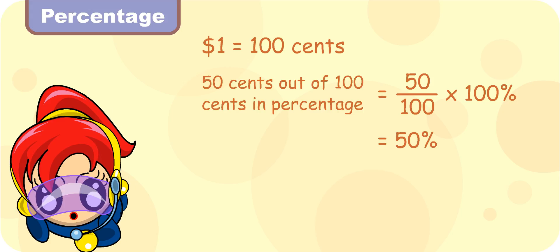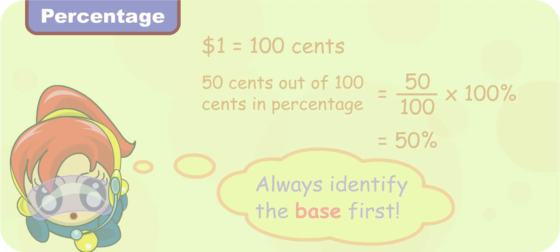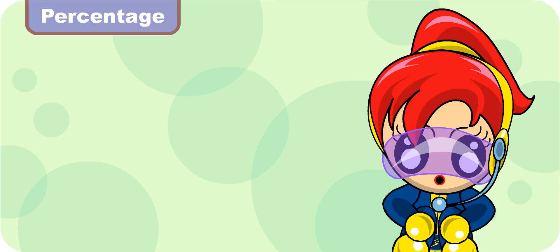You have to always identify the base first, which in this case is $1. The base is the amount of money that Turbo Boy had initially. Let's look at another example.